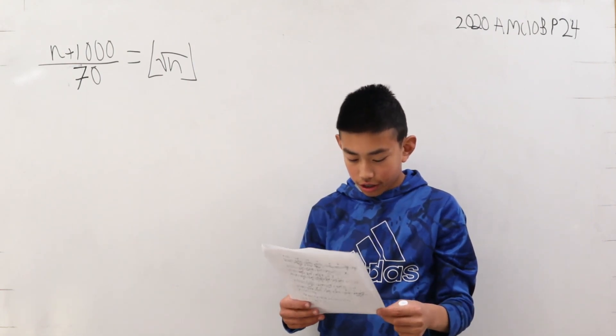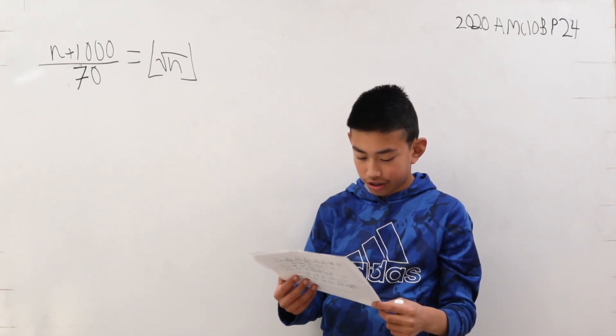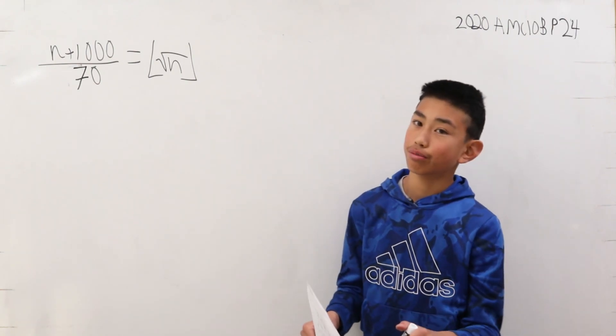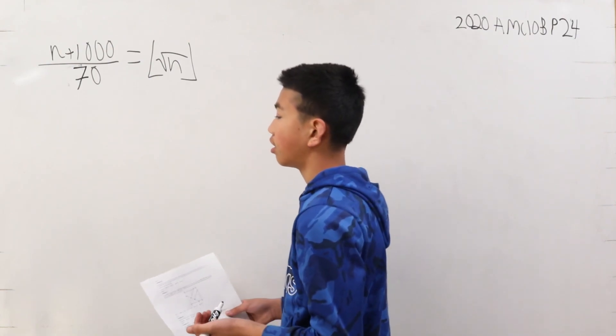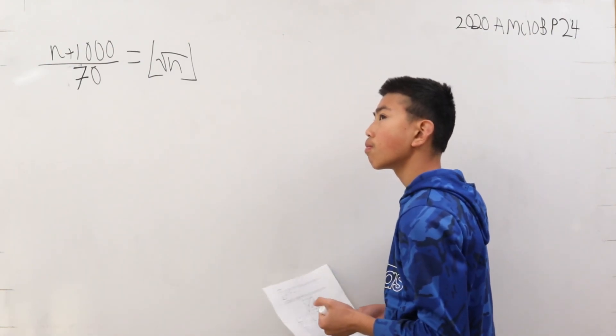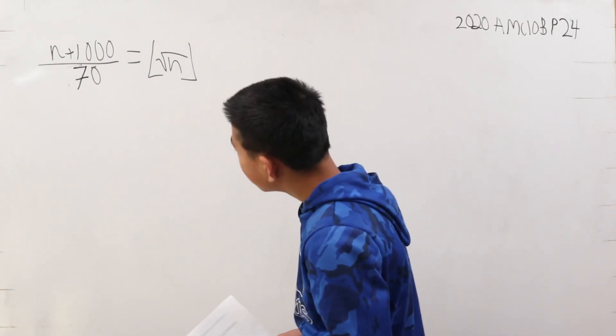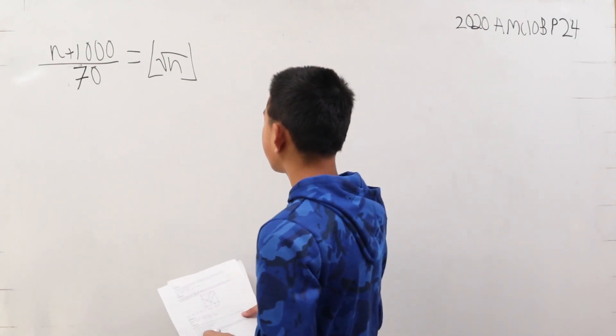Recall that this floor of x is the greatest integer not exceeding x. So it's basically rounding down, and if it's already an integer, you just keep it there. So, how do we do this?